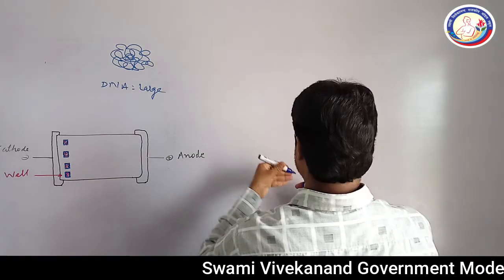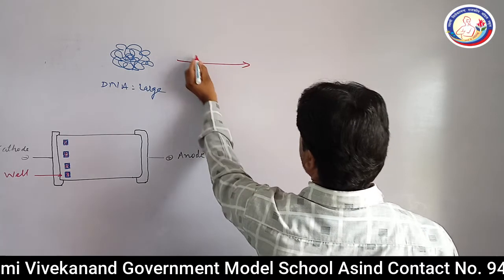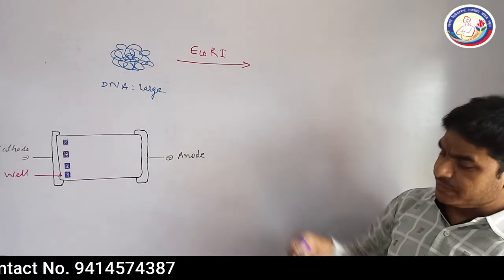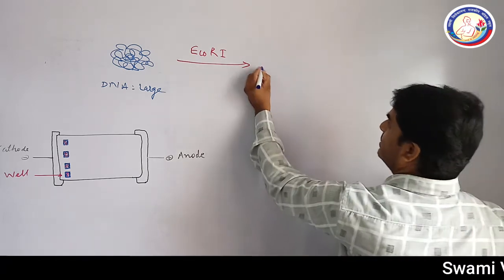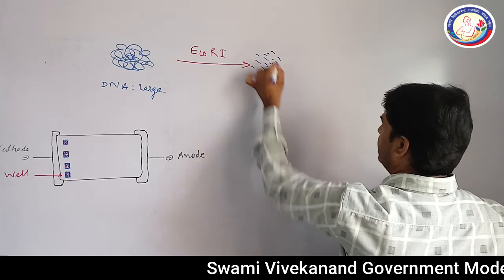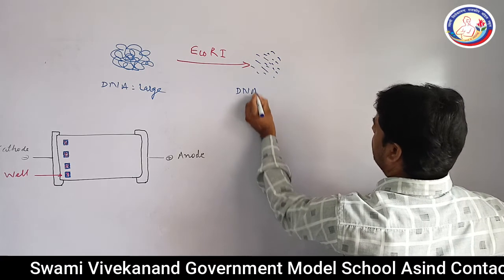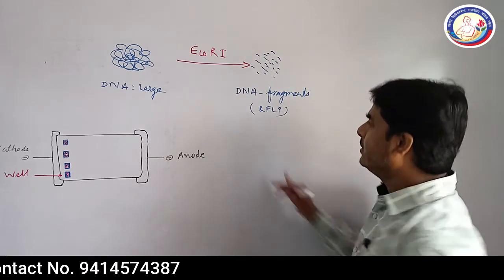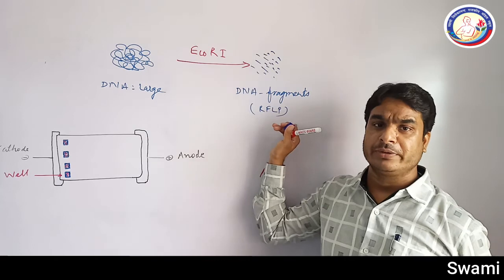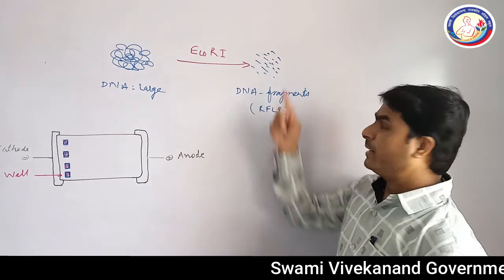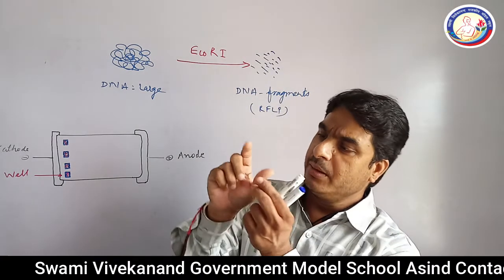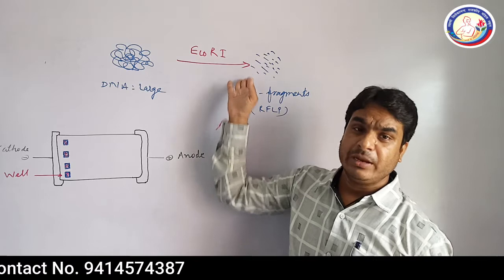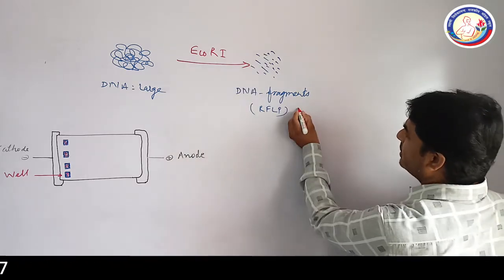We will use restriction endonuclease enzyme EcoRI. These enzymes will cut the large DNA into smaller fragments. These DNA fragments are known as RFLP — restriction fragment length polymorphism. Some fragments will be smaller in size, some fragments will be middle in size, and some fragments will be larger in size. These are the RFLPs present in the DNA sample.